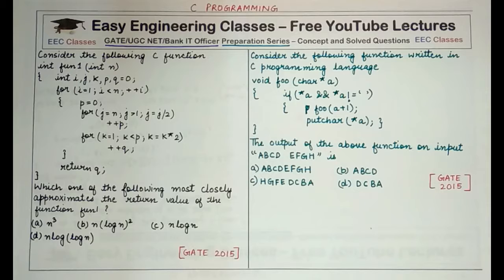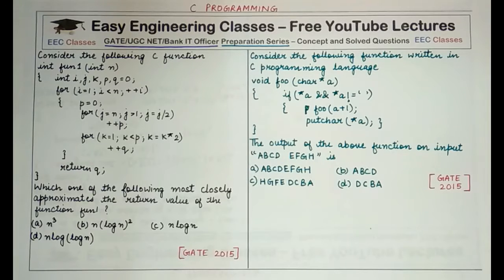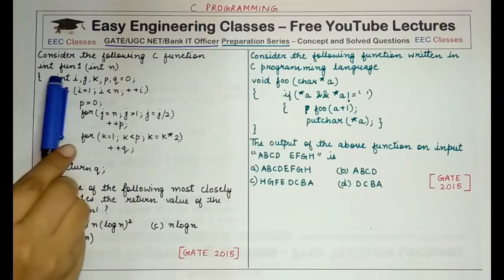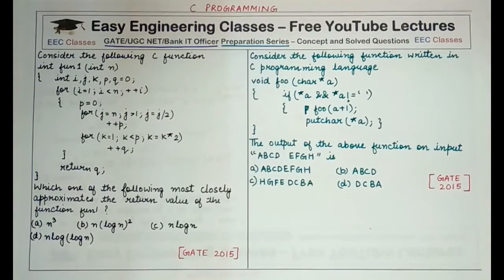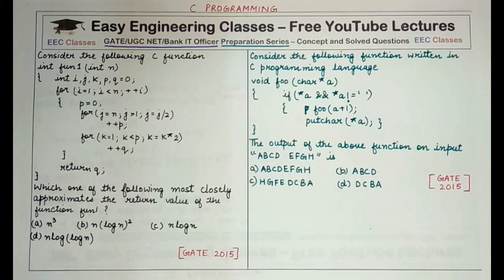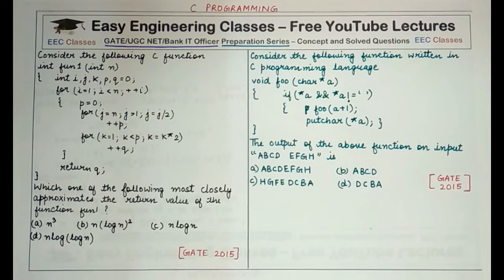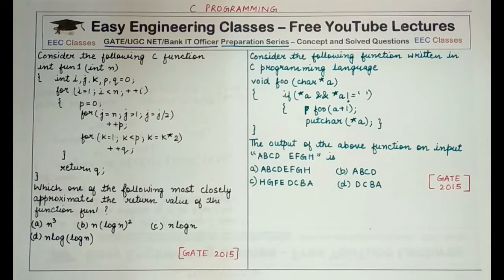Both questions appeared in GATE 2015. Starting with the first question: consider the following C function named fun1. It is defined as int fun1(int n). Inside the function we have int i, j, k, p, q = 0. There is a for loop with i from 1 to n (i++), p = 0, a second for loop with j starting at n going down while j > 1 with j = j/n (p++), and a third for loop with k = 1 while k < p with k = k*2 (q++).